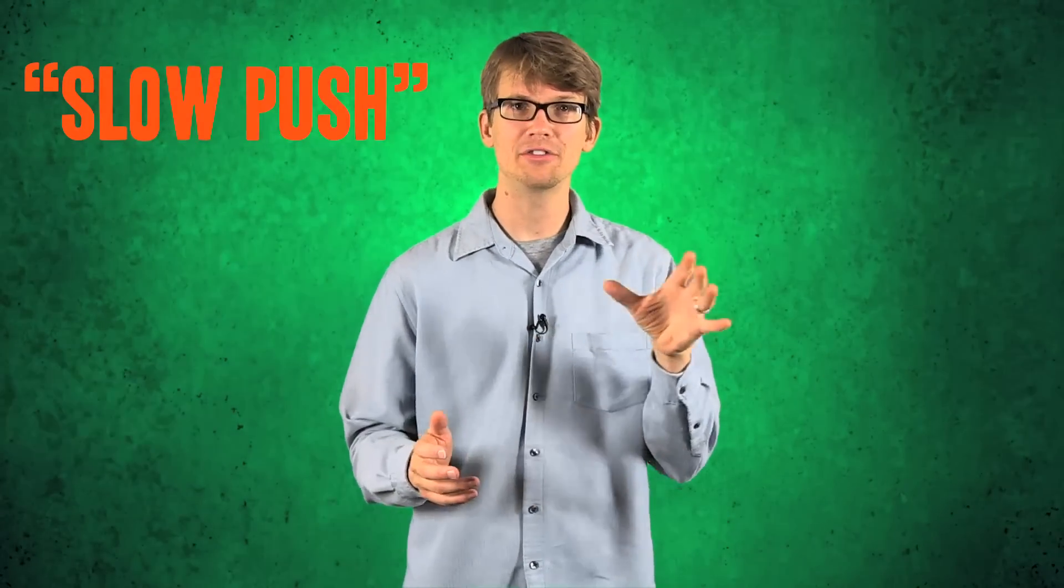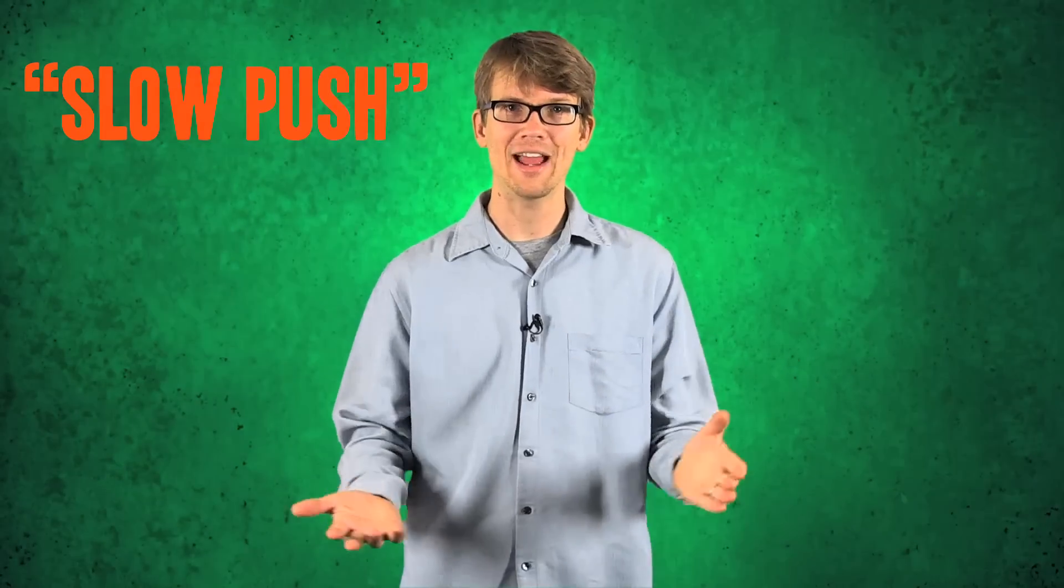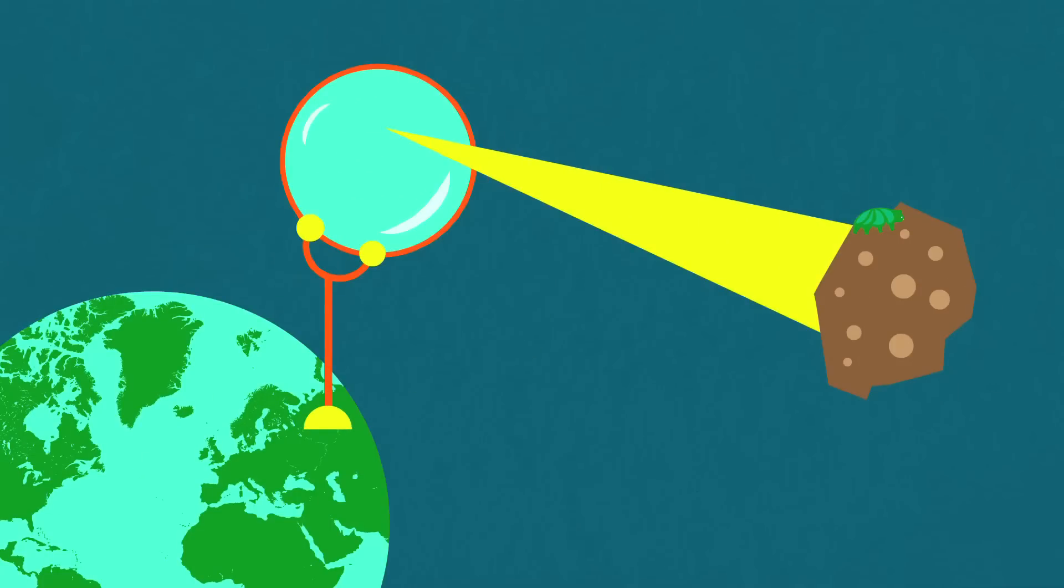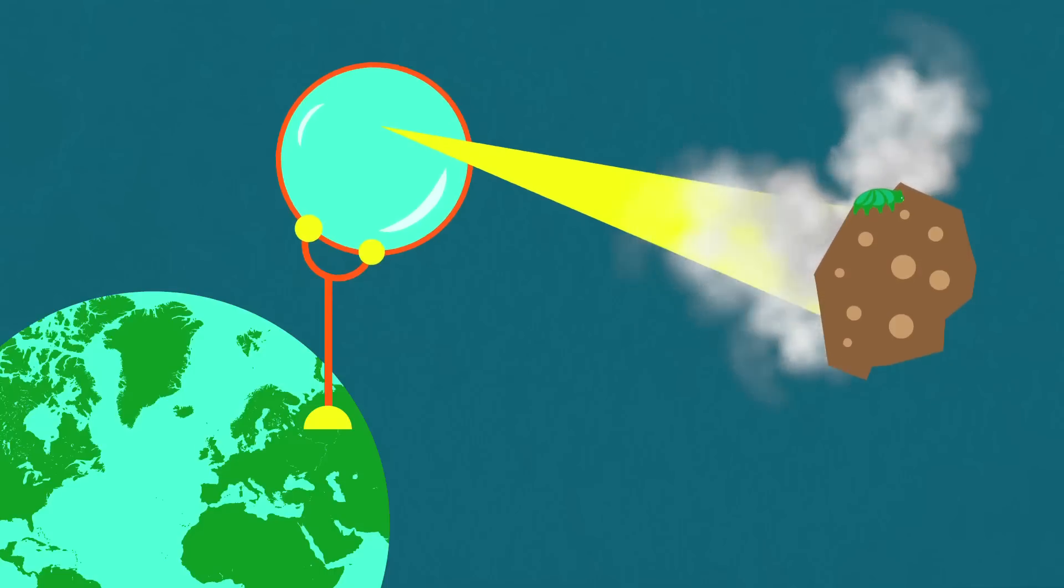The first plan proposes using a slow push, a strategy that involves sending a spacecraft to a threatening asteroid and then messing with it to alter its orbit. For example, one of these methods, called ablation, would use a huge mirror to focus sunlight on a small spot on the asteroid. The heat generated from the beam would vaporize material on the surface, creating a jet of gas and debris with just enough force to divert the asteroid's path.